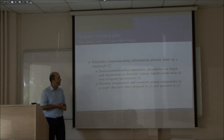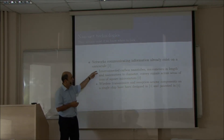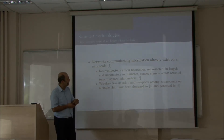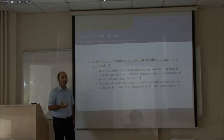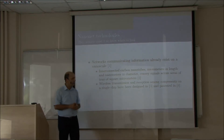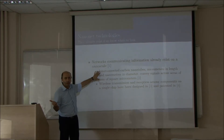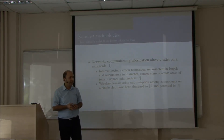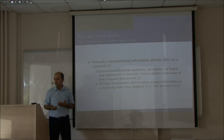Networks communicating in the nano scale already exist in nature, and also in the labs. Interconnected carbon nanotubes — micrometers in length and nanometers in diameter — can convey signals across areas of tens of square micrometers. This technology is actually currently in use for microprocessor designs. The current microprocessor design is at around 32 nanometers, so we are actually already doing something today — it's not that far.